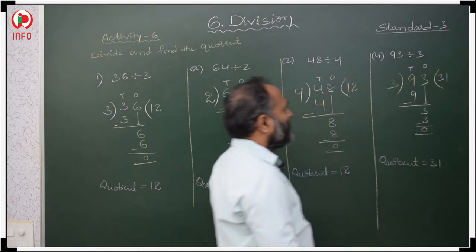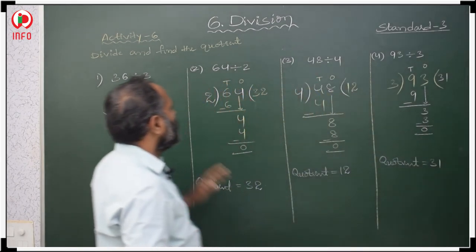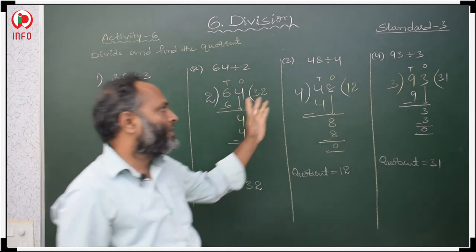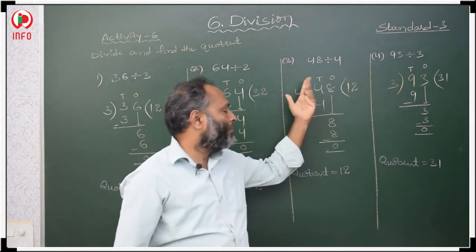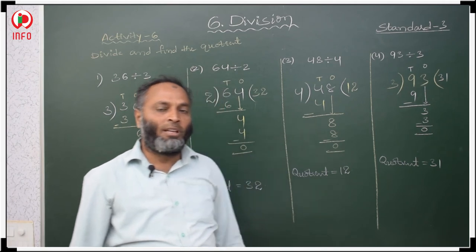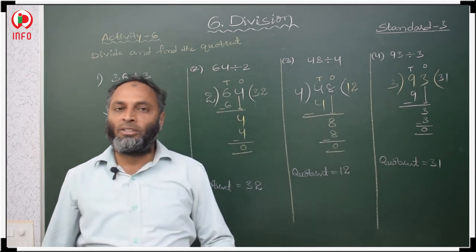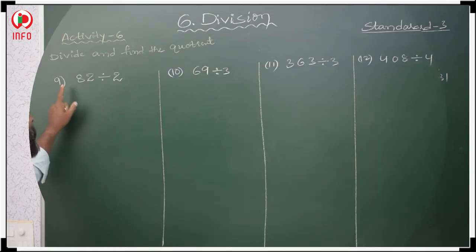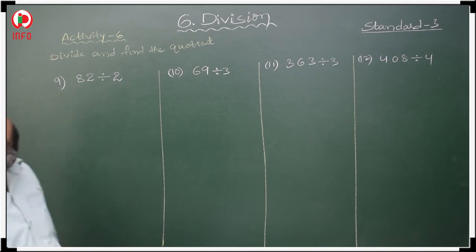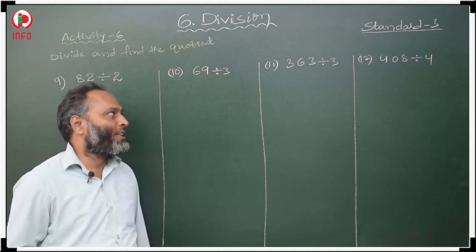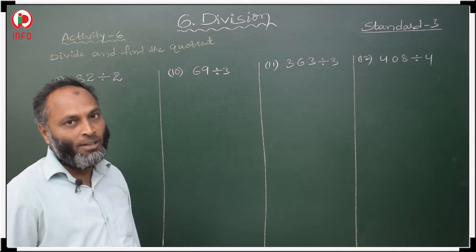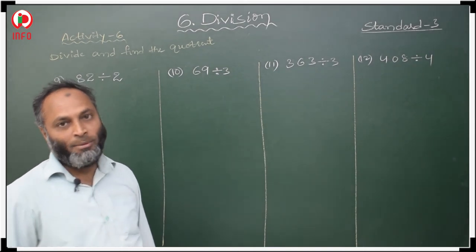So these are the quotients. These are all two-digit numbers divided by a single-digit number. After dividing, we write the quotient. Questions 5th, 6th, 7th, and 8th are similar — do those 4 questions as your home assignment.